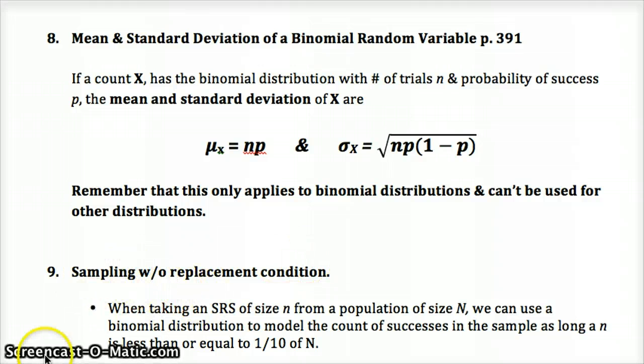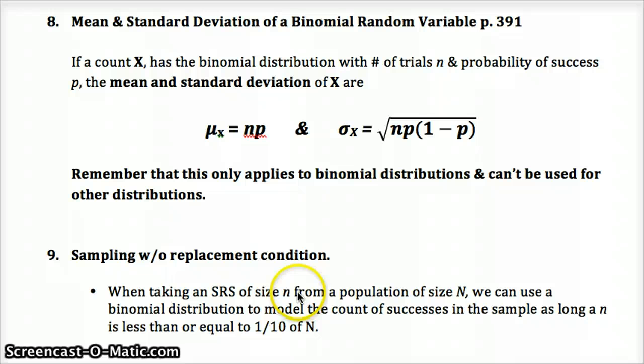A sampling without replacement condition. When taking an SRS of size n from a population of size N, capital N, the population, we can use this binomial distribution to model the count of successes as long as we don't sample more than a tenth of the population. So if we had 1,000 people in the population, we could use a binomial distribution to model it as long as we don't have more than a hundred in our sample. If we have too many from the sample, we can't use the binomial distribution because independence breaks down of outcomes. So for binomial distributions, we can't sample more than a tenth of the total population.